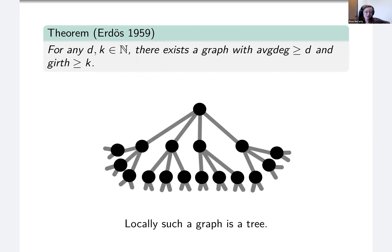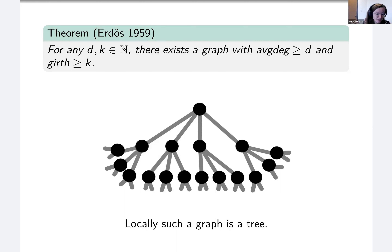I want to start with a classic theorem of Erdős which says that for any positive integers d and k, there exists a graph with average degree at least d and girth at least k. These graphs have a lot of edges but locally they look like a tree, as in the picture. The average degree is really just the average degree of a vertex, and the girth is the length of a shortest cycle. So these are really dense graphs but graphs that locally look like a tree.